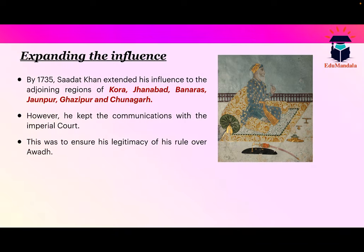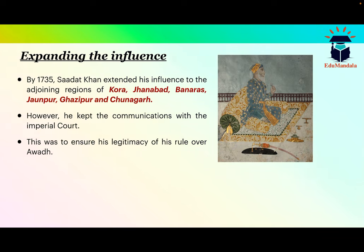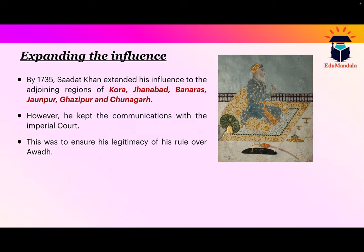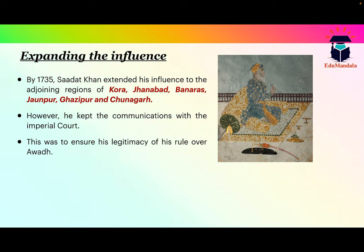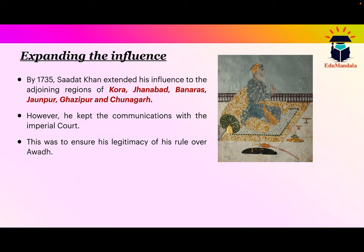Beyond establishing hereditary position, they focused on expanding their influence. There were many regions — such as Kora, Jahanabad, Banaras, Jaunpur, Ghazipur, and Chunargadh — over which they consolidated control. These were all Mughal territories where they established their authority. They made sure not to formally break ties with the Mughal court, kept communication, and kept informing the emperor of their consolidations, maintaining only formal relations.